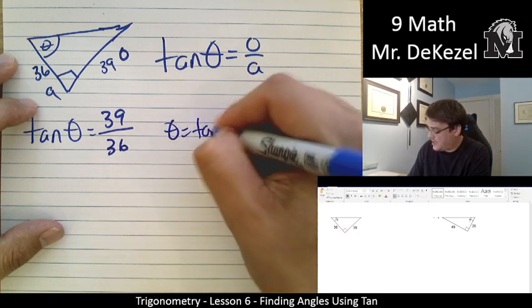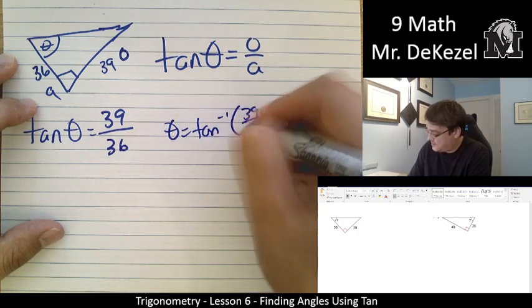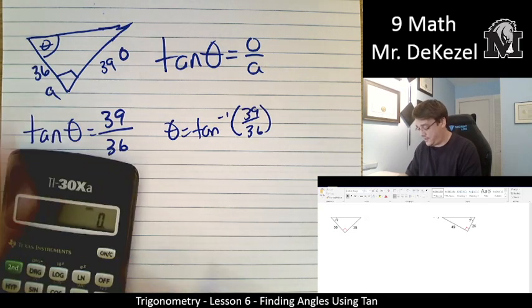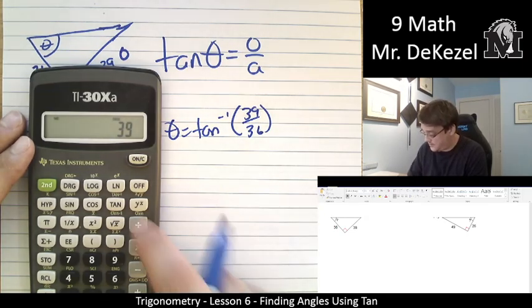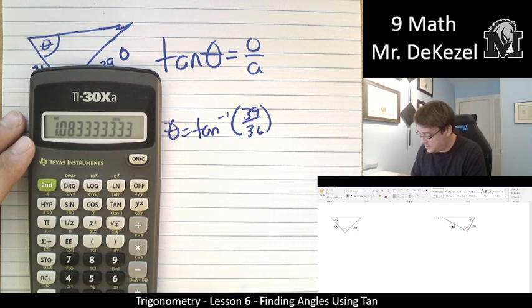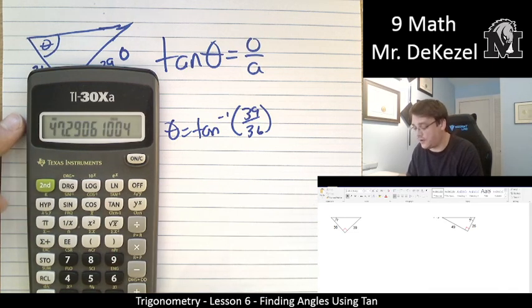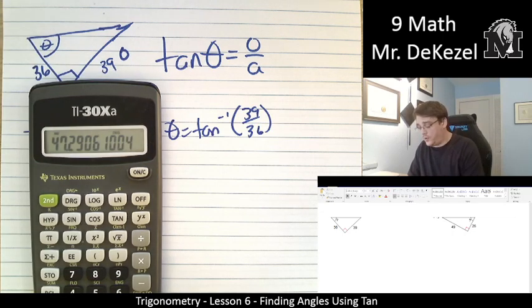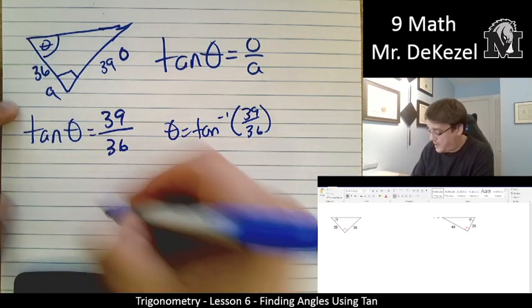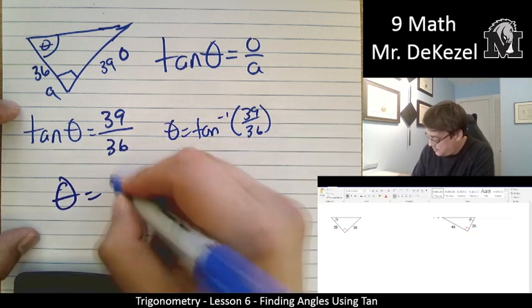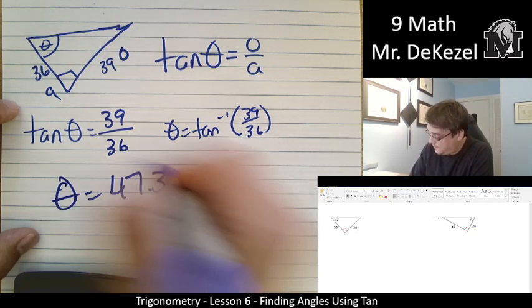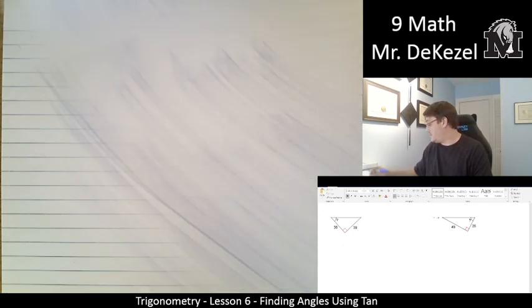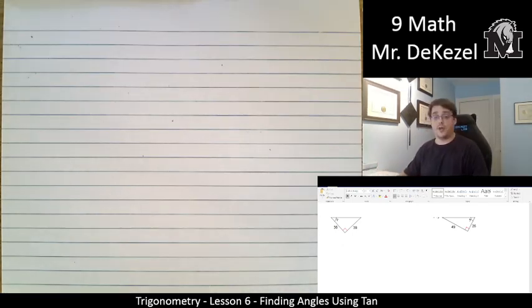Theta is equal to the tan inverse of this. Let's find out. I'm learning something with you every day. 39 divided by 36 equals tan inverse. Okay, 47.1 to... 47.3. I don't know why I thought that might not work. That's why we're using our calculator for these problems. I wouldn't be able to do it without them.